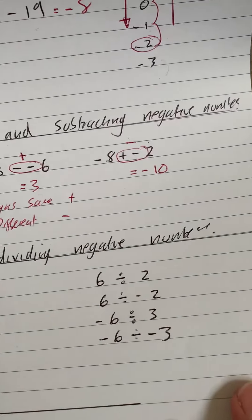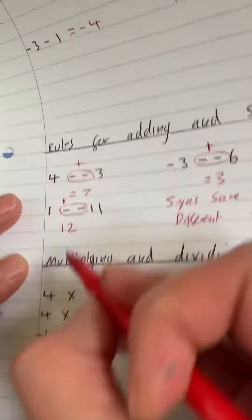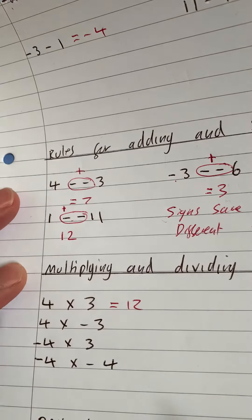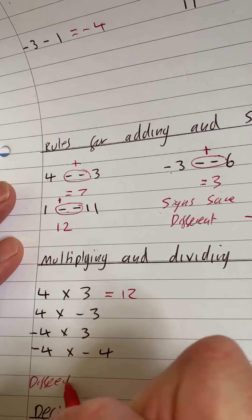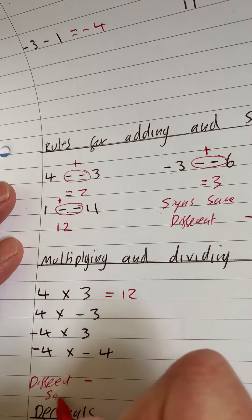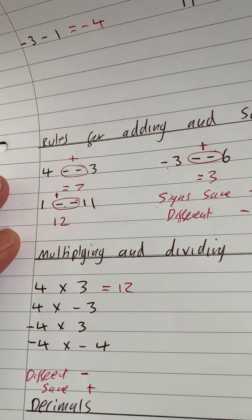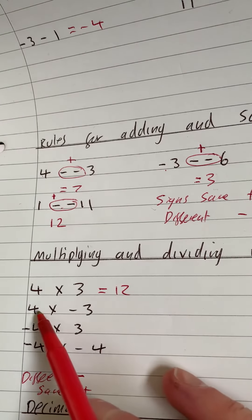Multiplying and dividing negative numbers. So 4 times 3 is 12. Now if they're different, it's going to be negative. If they're the same, it's a positive. So it's the same as up here, but they don't have to be next to each other.